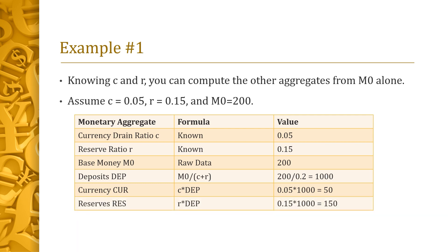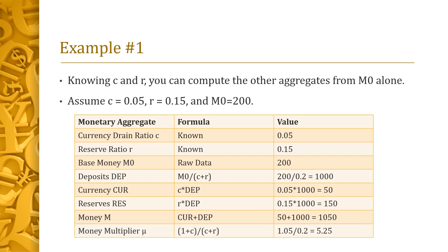Reserves RES equal R times DEP, which is 0.15 times 1,000, giving 150. Money M equals CUR plus DEP, which is 50 plus 1,000, giving 1,050. Finally, the money multiplier mu is (1 plus C) divided by (C plus R), which is 1.05 divided by 0.2, giving 5.25.